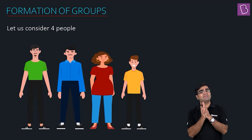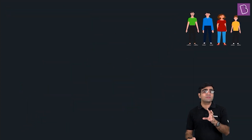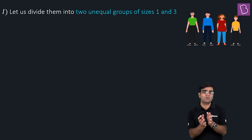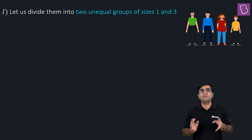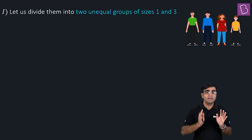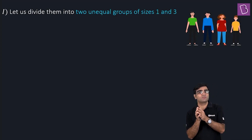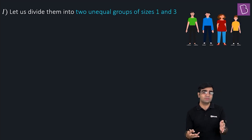Let's quickly get started. We have four people and we need to form groups. The goal is to divide them into unequal groups — one group with one person and another group with three persons. That's how we need to count how many groups can be formed. So in total we have four folks, and I want groups in unequal fashion such that one group contains one person and the other contains three.